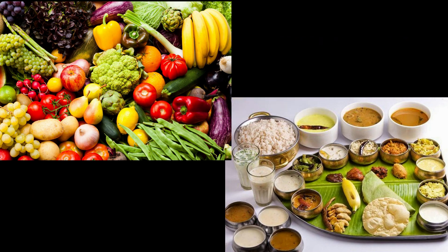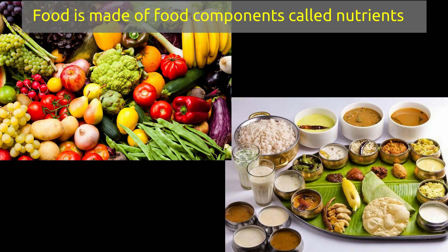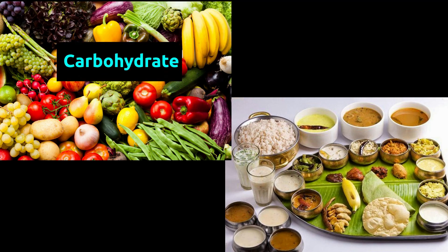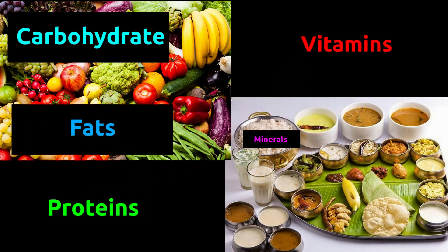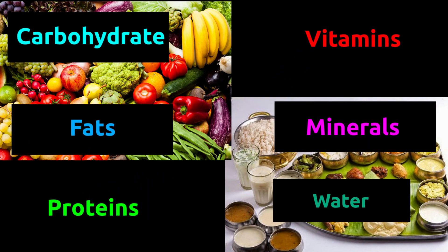Our food is made of different constituents called nutrients. There are six such nutrients that we get from different food items: one, carbohydrate; two, fats; three, proteins; four, vitamins; five, minerals; and six, water.